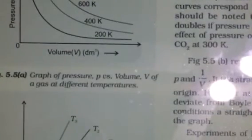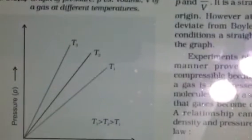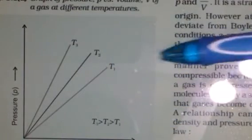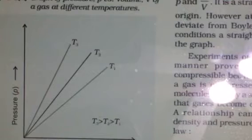If you are plotting a graph for pressure versus 1 by V, it is a straight line Y equals mx type of graph, where T1 is less than T2 is less than T3.